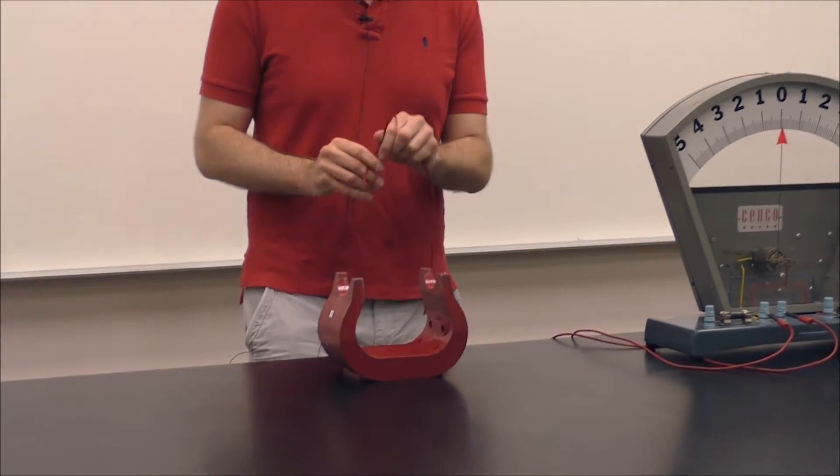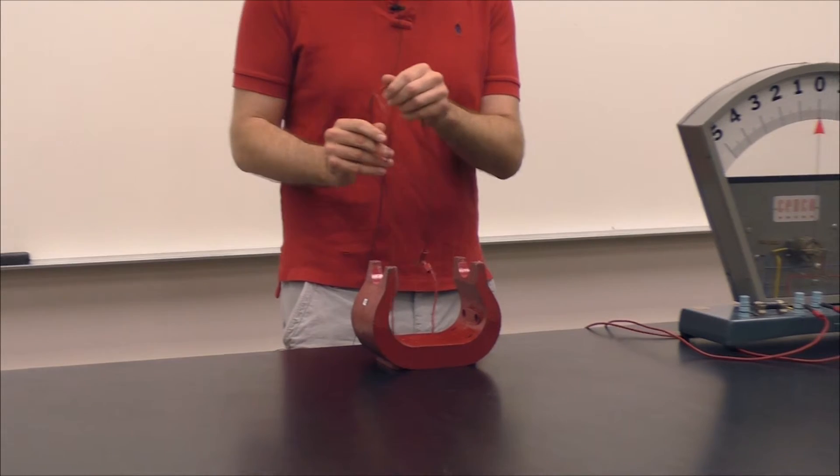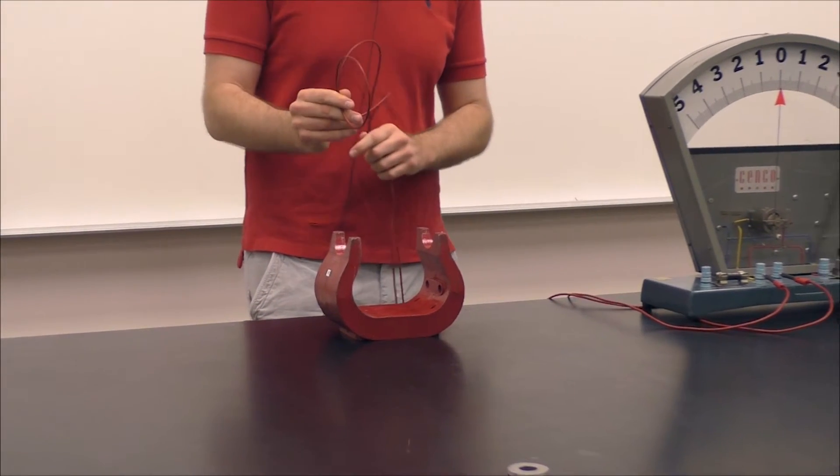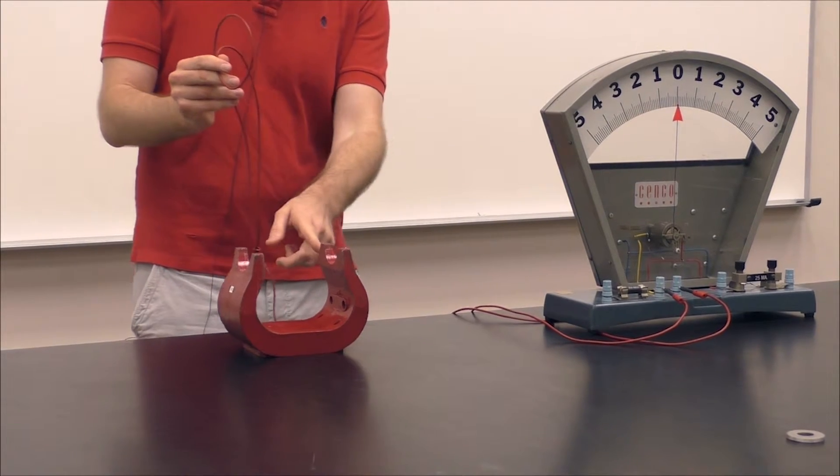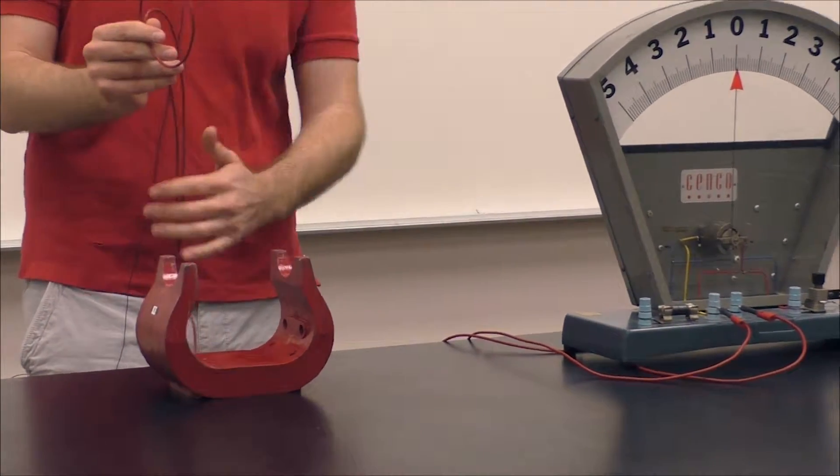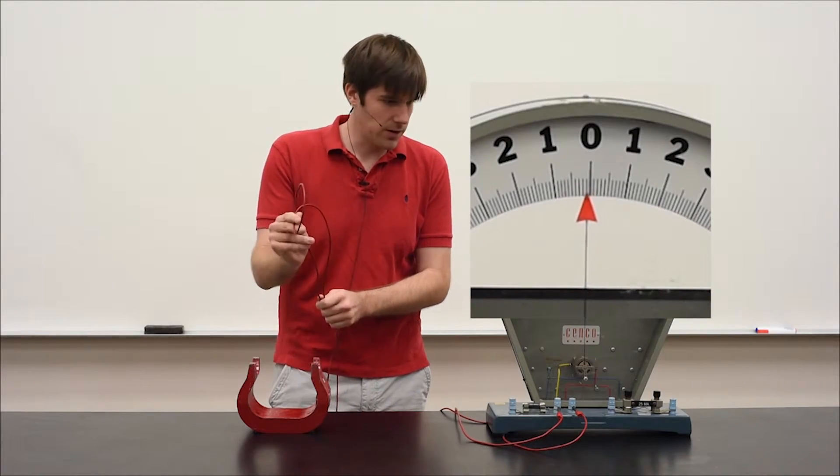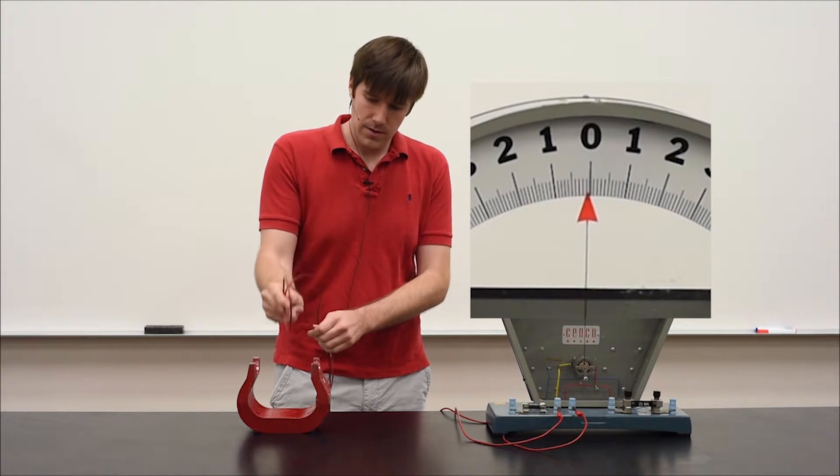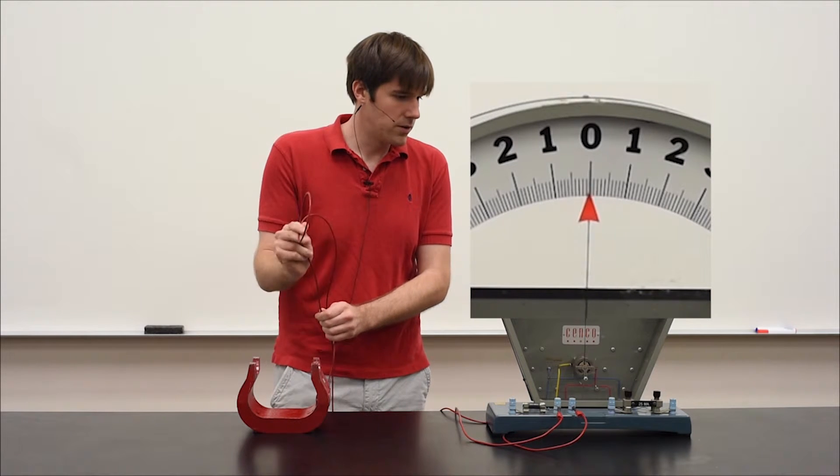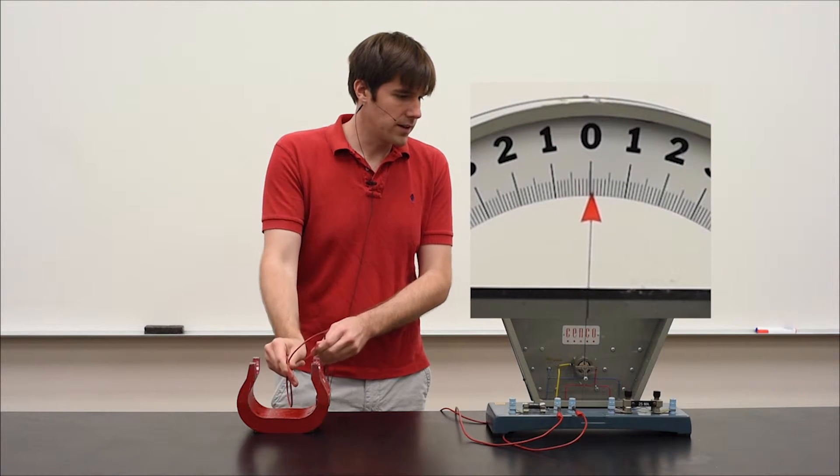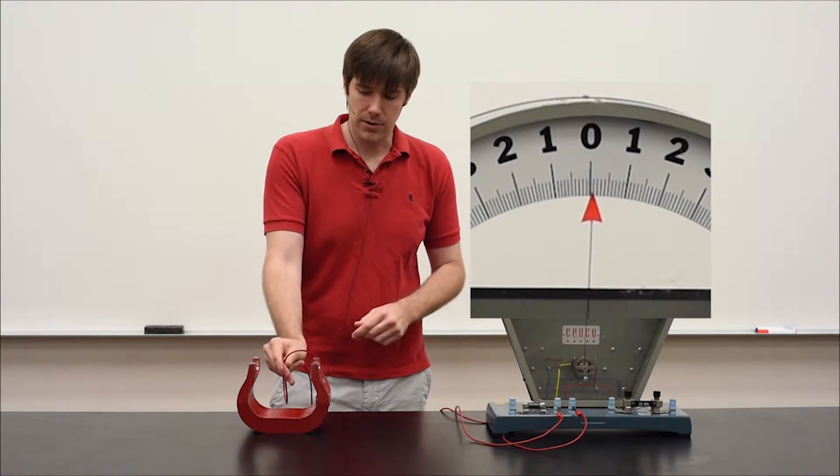Now what I'm going to do is move the loop through the magnetic field such that we have magnetic field lines moving from left to right. When I move the loop through, you can see that because we have a change in magnetic flux through the coil, you get a small reading in the galvanometer.